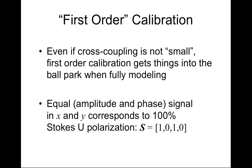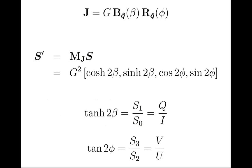If you have equal signal in X and Y, that corresponds to 100% correlation between X and Y, which is the Stokes U signal — represented as the four-vector with one for total intensity, zero for Stokes Q, one for Stokes U, and zero for Stokes V. The Jones matrix for an ideal feed has only diagonal terms: a boost along the Stokes Q axis representing the differential gain, and a rotation about the Stokes Q axis representing the differential phase. The equivalent Mueller matrix has a boost in the upper-left two-by-two part and a rotation in the lower-right.